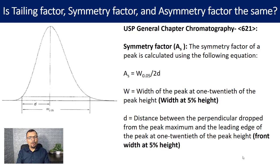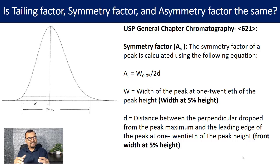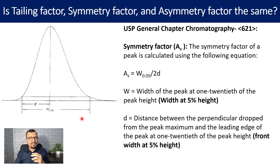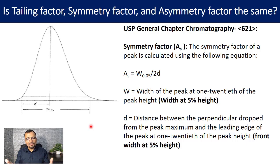So what is W 0.05 and 2D? W 0.05 indicates the width of the peak at 1/20th of the peak height — you can think of it as the width of the peak at 5% height from the base, denoted as W 0.05, which is the complete width of the peak at that 5% height. D stands for the distance between the perpendicular drop from the peak maximum and the leading edge of the peak at 1/20th of the peak height.